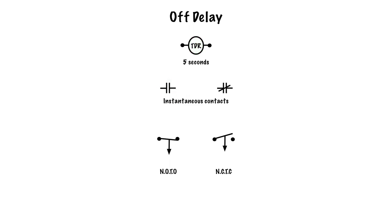When TDR de-energizes, the instantaneous contacts go back to their original state — what was once closed becomes open, and what was once open becomes closed. The magic of the off delay happens with the timed contacts: what was once closed is still closed, and what was once open is still open, because the timing in an off delay begins when the coil is de-energized. It will wait five seconds, then the normally open time-to-open contact will open, and the normally closed time-to-close contact will close.